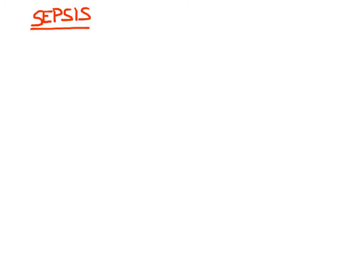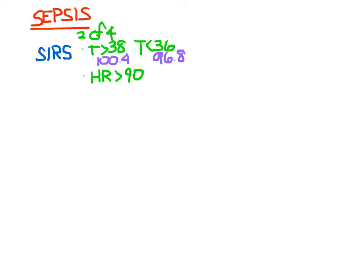The first one is for SIRS, which stands for Systemic Inflammatory Response Syndrome. In order to meet the SIRS criteria, you have to have two of the four things: a temperature that's greater than 38 or less than 36 degrees Celsius—that's 100.4 degrees Fahrenheit or 96.8 degrees Fahrenheit. A heart rate greater than 90.